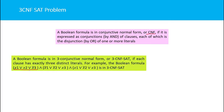A boolean formula is in 3CNF if each clause is expressed using OR operations on literals, and then we do the AND operation of each clause. This kind of expression is called 3CNF. OR is called a disjunction and AND is called a conjunction.